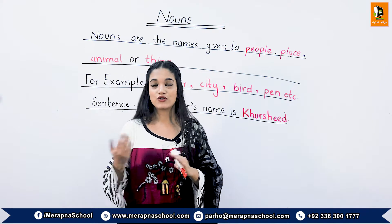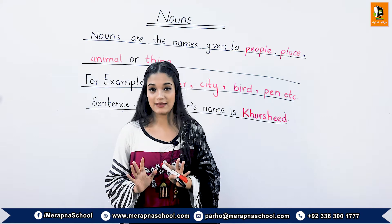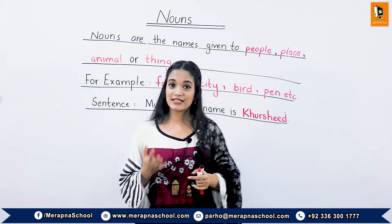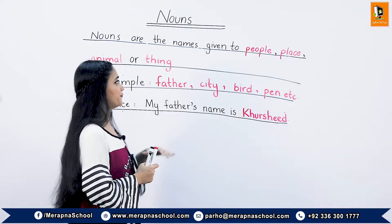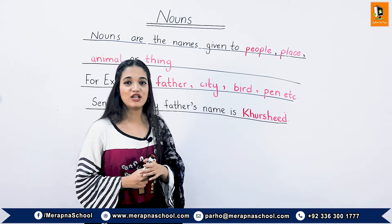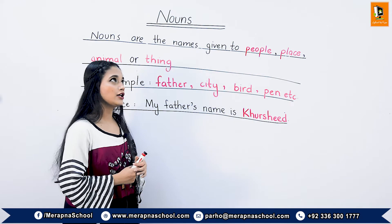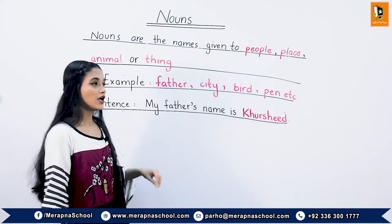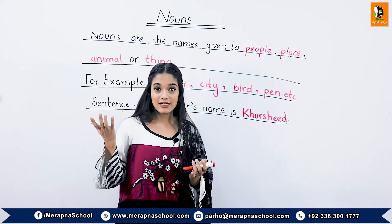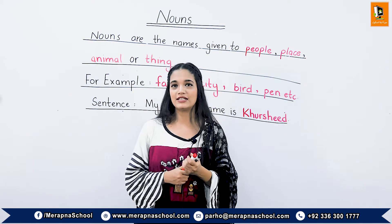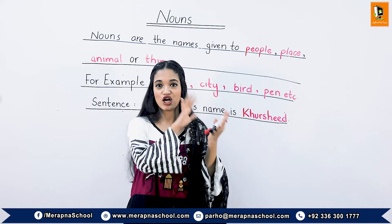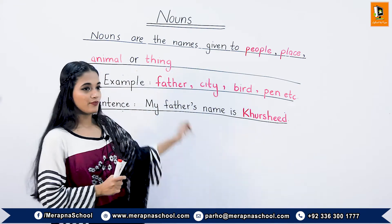More examples of nouns for people include: mother, sister, brother, uncle, nephew, niece, driver, and their representative names. For places: city, sea, ocean, buildings, and their particular names — for example, Atlantic Ocean, Karachi as a specific city, and Pakistan as a specific country. For animals, we can take examples of sea animals, birds, and land animals — for example, 'fish' is a noun, and 'shark' is also a noun as the specific name.